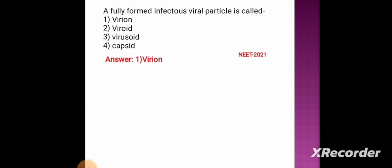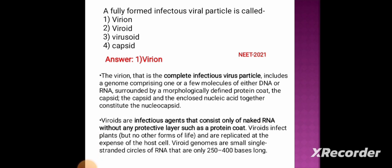The correct answer is virion. The virion, the complete infectious virus particle, includes a genome comprising one or a few molecules of either DNA or RNA, surrounded by a morphologically defined protein coat called the capsid. The capsid and the enclosed nucleic acid together constitute the nucleocapsid.